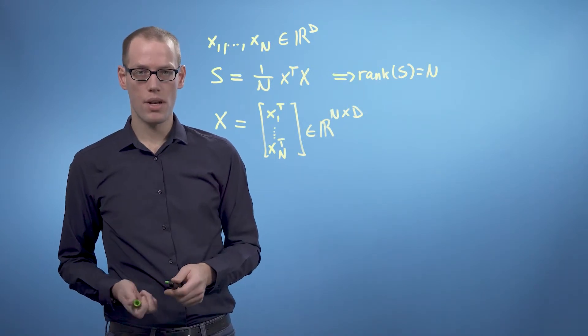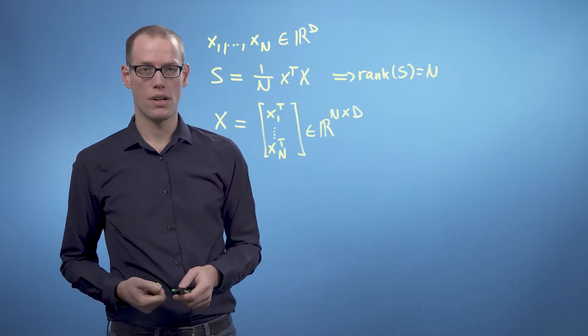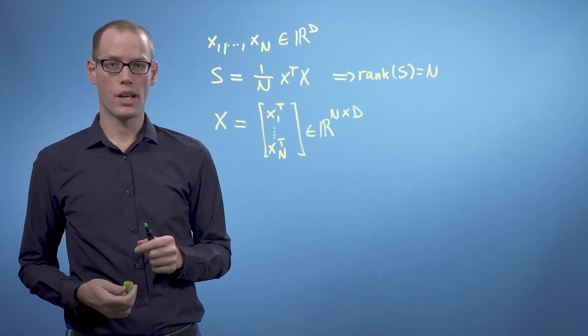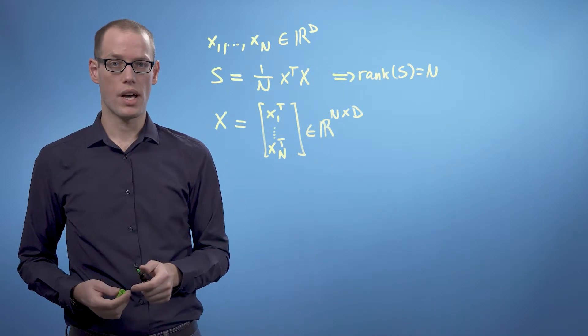In the next few minutes, we'll exploit this and turn the d by d covariance matrix S into a full rank n by n covariance matrix without eigenvalue 0.